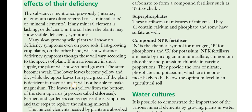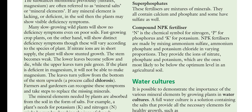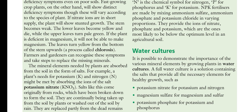If the plant is deficient in magnesium, it will not be able to make chlorophyll. The leaves turn yellow from the bottom of the stem upward — this is called chlorosis. Farmers and gardeners can recognize these symptoms and take steps to replace the missing minerals.